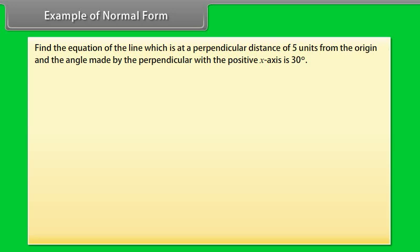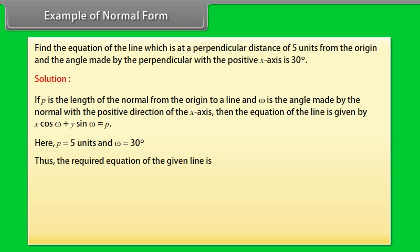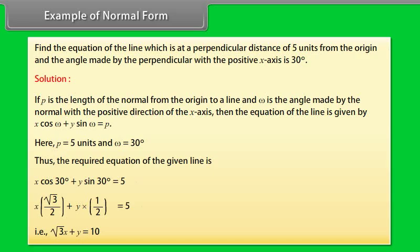Example: Find the equation of the line which is at a perpendicular distance of 5 units from the origin, and the angle made by the perpendicular with the positive x-axis is 30 degrees. Solution: If p is the length of the normal and ω is the angle made with the positive x-axis, then x·cos ω + y·sin ω = p. Here p = 5 and ω = 30°. Thus the required equation is x·cos 30° + y·sin 30° = 5, which simplifies to x√3 + y = 10.